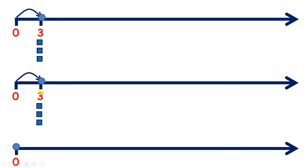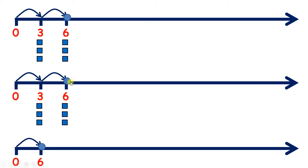Starting on three, we have three at the top and three in the middle, so that gives us a total of six. Now another three on each of our top two lines and we have a total of 12 blocks, because six plus six is 12.